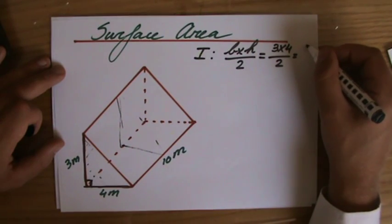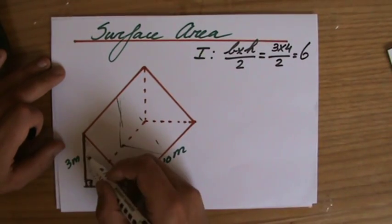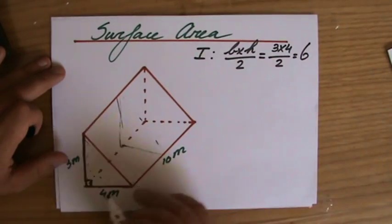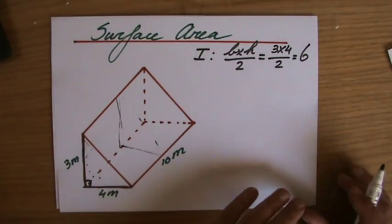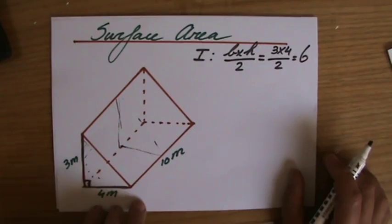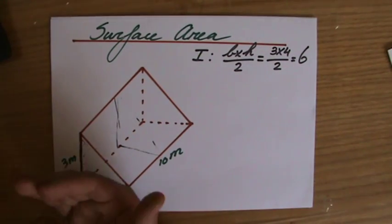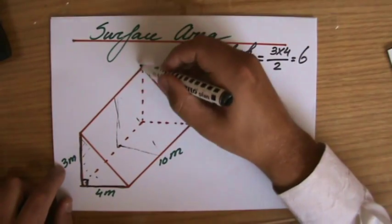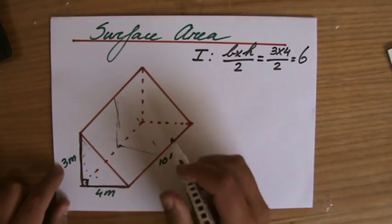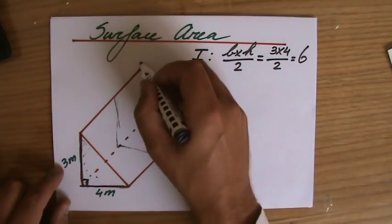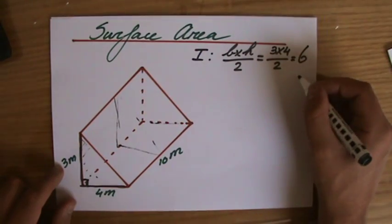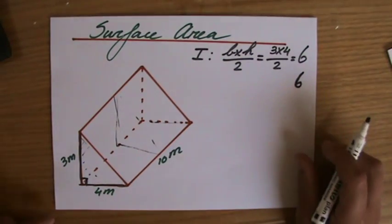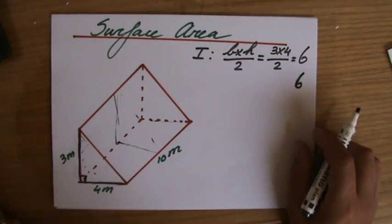That is 12 divided by 2, so 6. So the area of this triangle, this right angle triangle is 6 meters squared. I am going to put a unit when I am finished. And because it is a prism, that face on the back, which is also a triangle, is exactly the same. That is also 4, that is also 3 meters, so I am going to put another 6 here. The area of that triangle on the back is also 6 meters squared. Got those two covered.